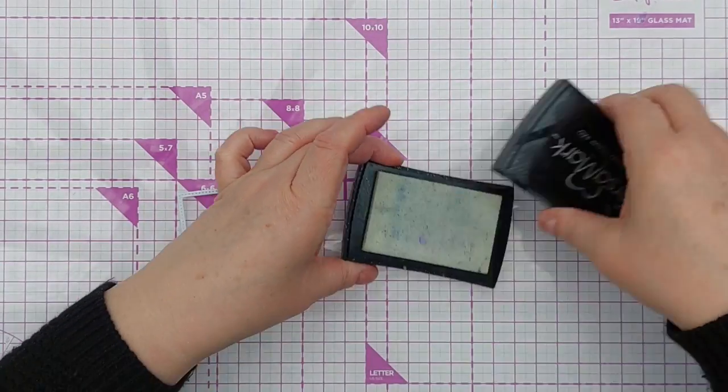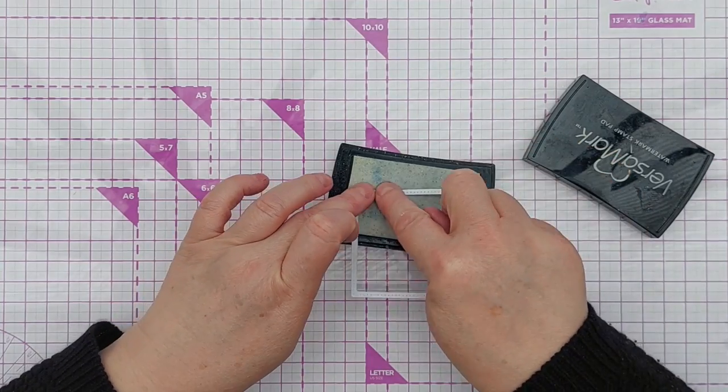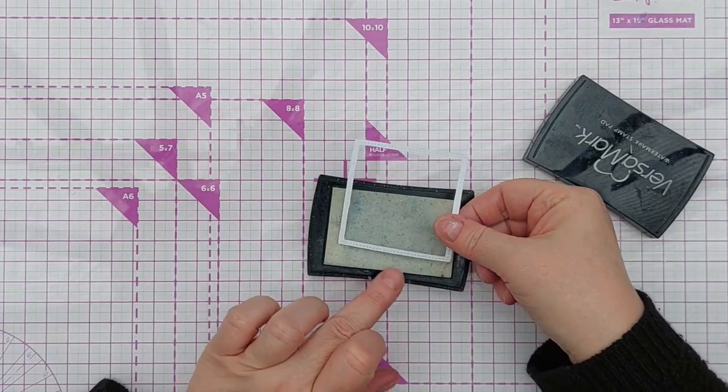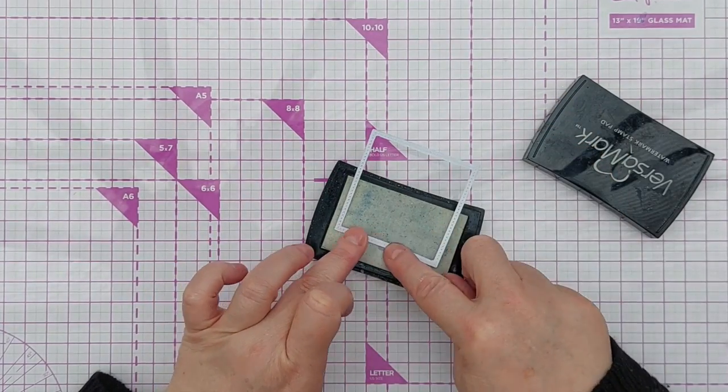What I want to do next is add some more of that pink embossing powder to the frame so that the frame is a solid pink.